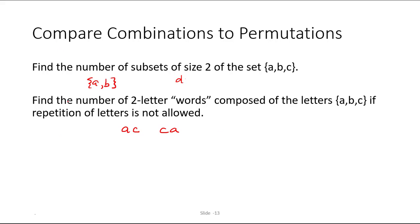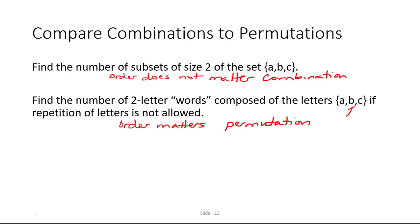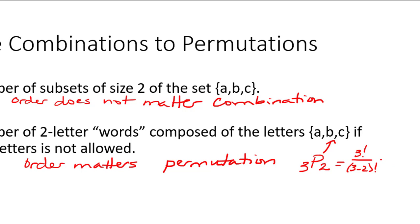So when order does not matter, you're using a combination. It's a subset. But when order matters, this is a permutation situation. Specifically, how many words could be formed from this set, assuming that we are not allowed to repeat? We have three letters to choose from, we're choosing and arranging two of them. So 3P2 would be the number of possible words. That would be 3 factorial over 3 minus 2 factorial, which would be 3 times 2 times 1 over 1 factorial is 1. So you would have six possible words.